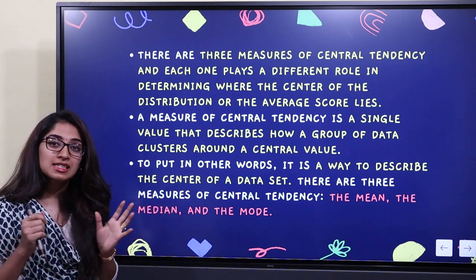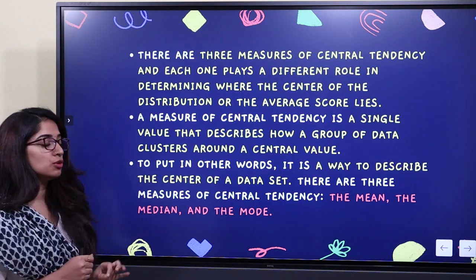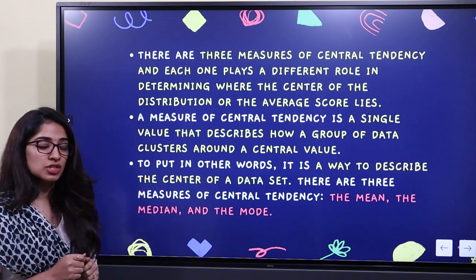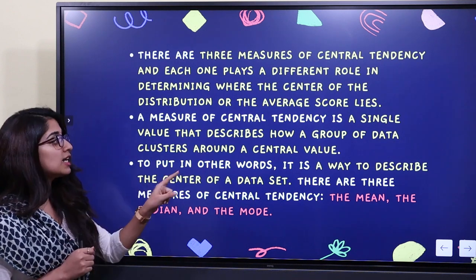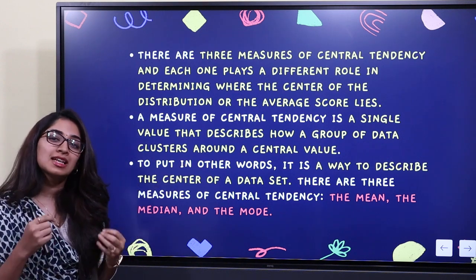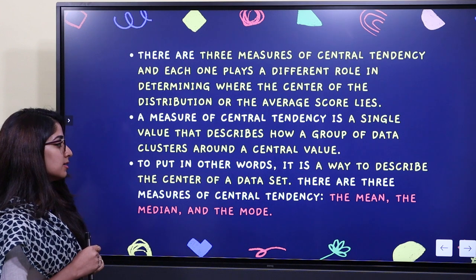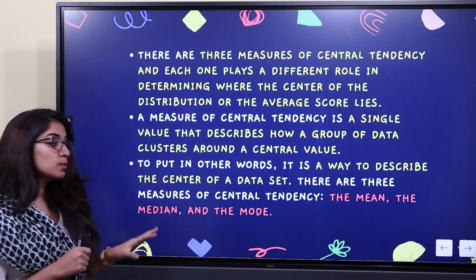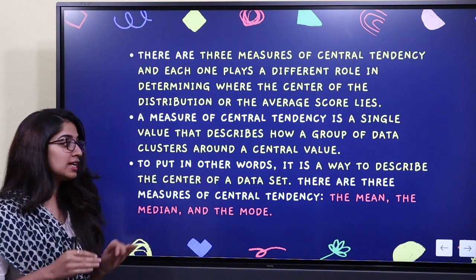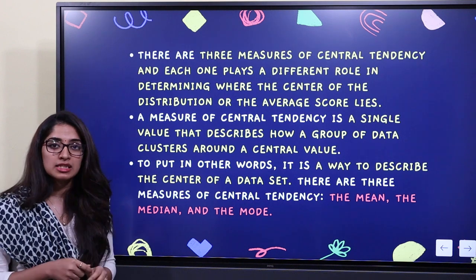All three measures serve the same purpose. A measure of Central Tendency is a single value — it is a way to describe the center of a data set. These are called the three measures of Central Tendency.